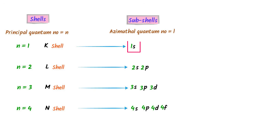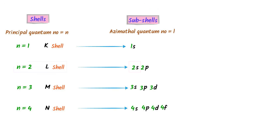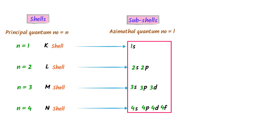Remember that 1s is different from 2s. 1s means it is the subshell of the first main shell, and 2s means it is the subshell of the second shell. So remember that 1, 2, 3, 4 with SPDF represents the main shells.